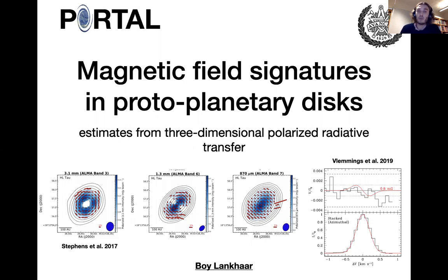Molecular lines can get polarized through the Goldreich-Kylafis effect, the GK effect, and their polarization angles can trace the magnetic field direction.